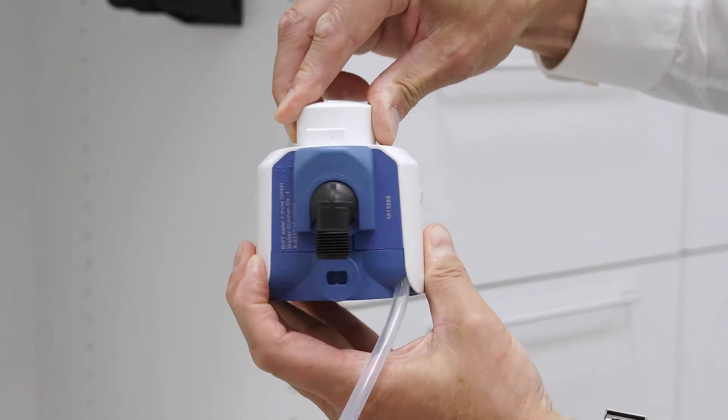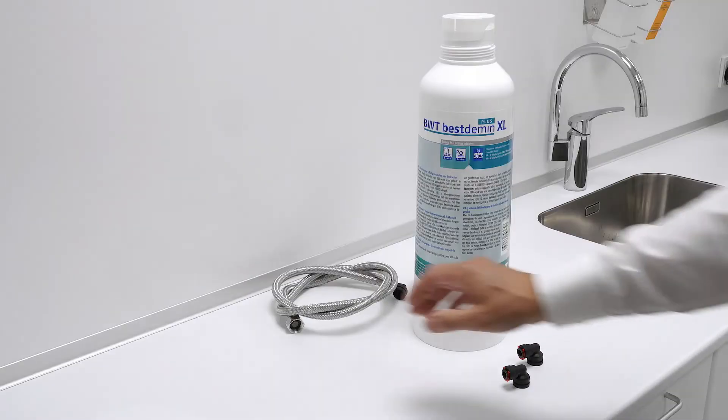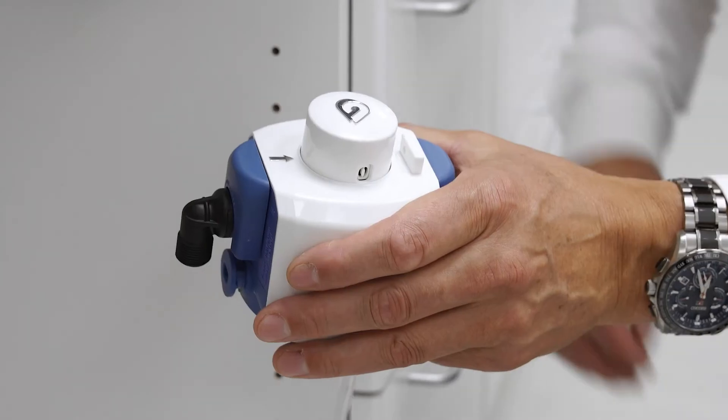Set the filter head to position zero. The access hose must be mounted in the direction of the arrow.